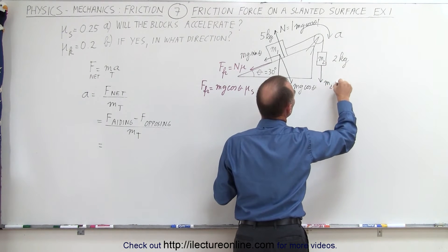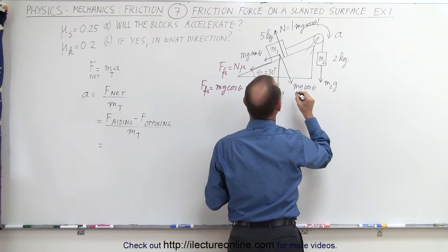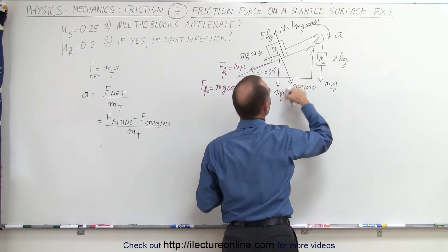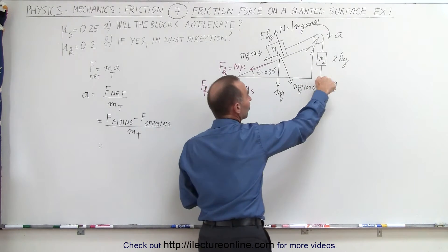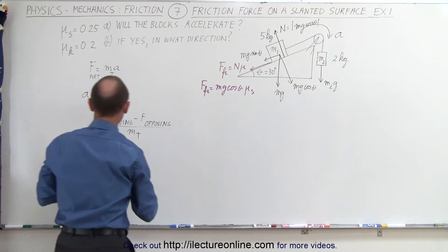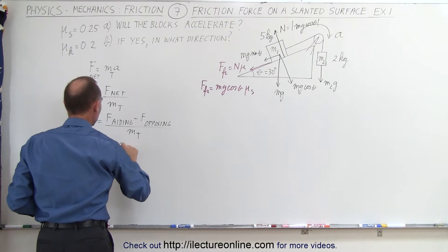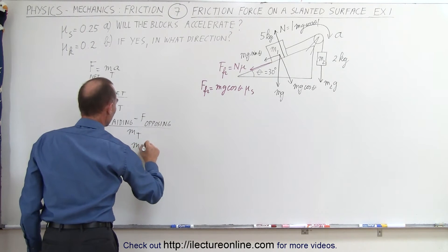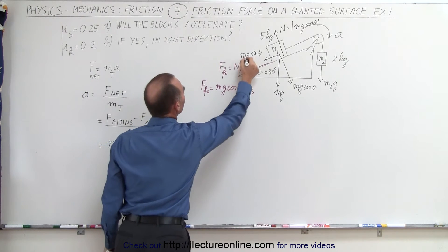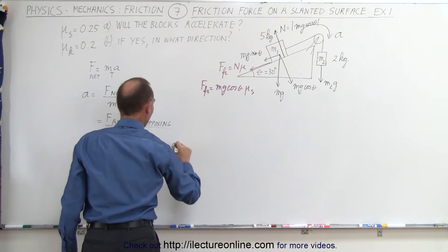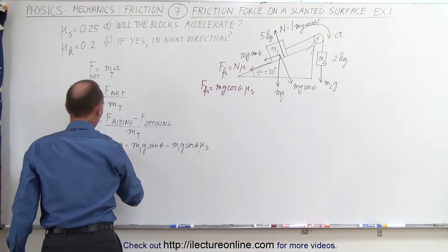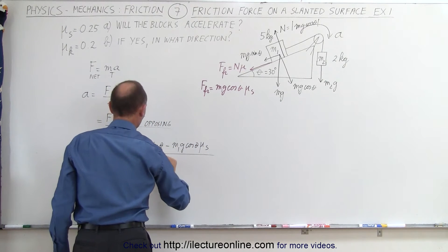Notice we're assuming the acceleration is in this direction, and we have one more force: M2g, the force of gravity pulling this block — and this should be called M1g so we differentiate between them. This is M1, this is M2. So we have one force aiding acceleration which is M2g, and two forces opposing it. This gives us M2g minus M1g sin theta minus M1g cos theta times mu sub s, all divided by the total mass M1 plus M2.